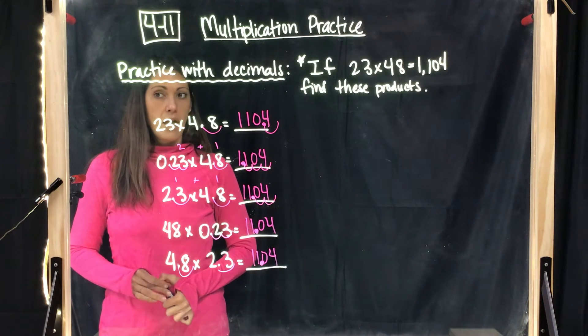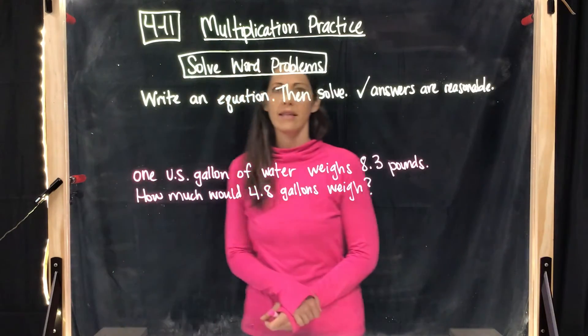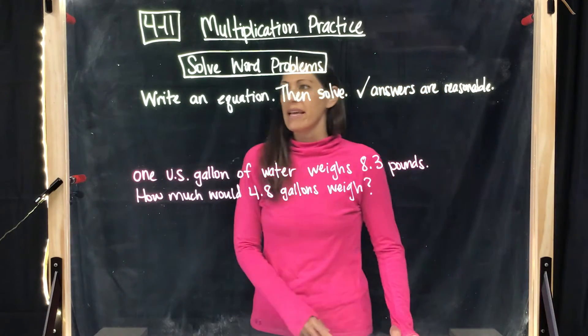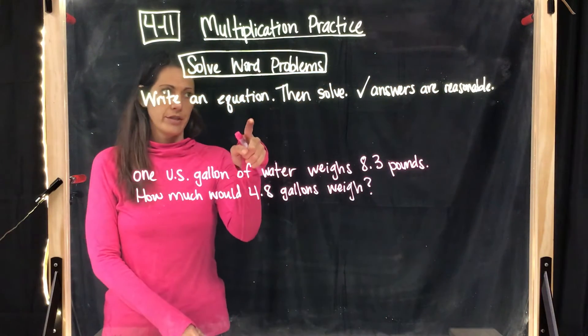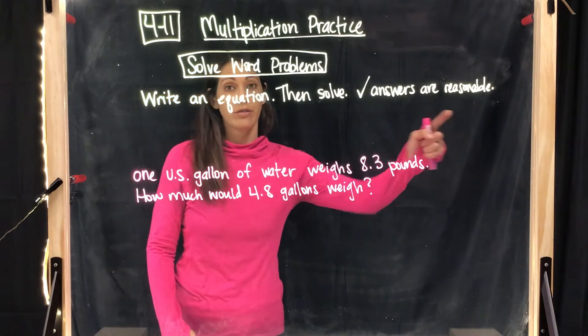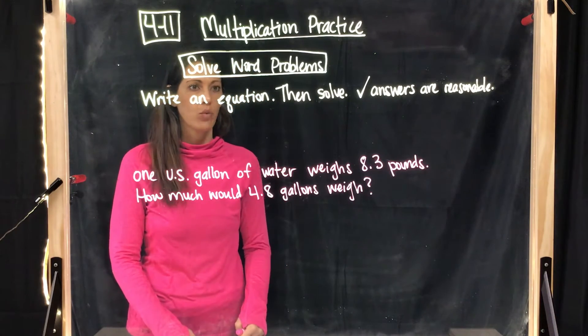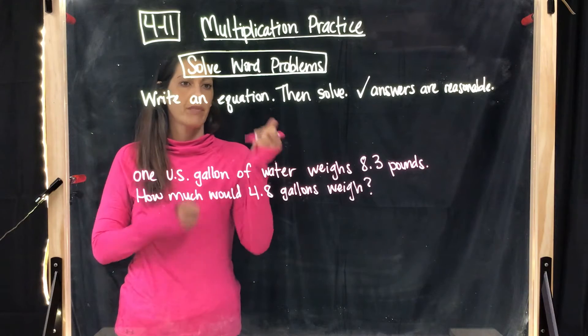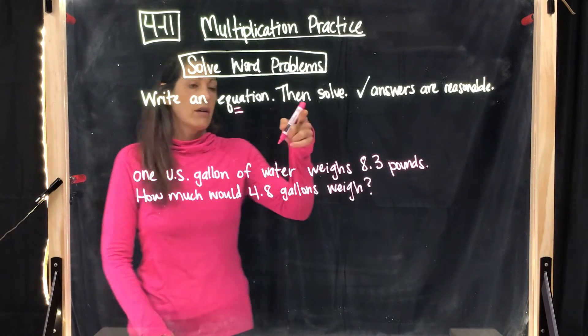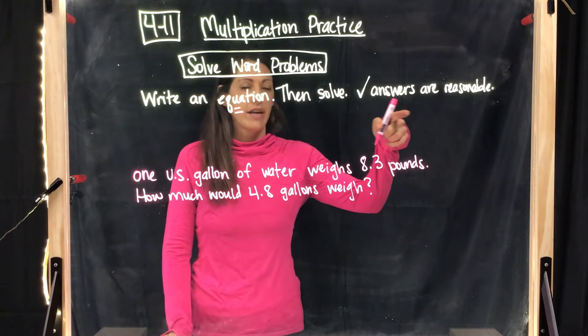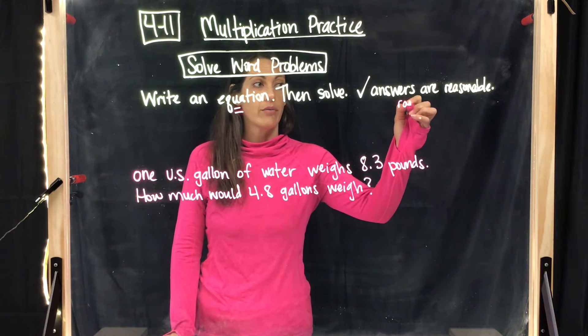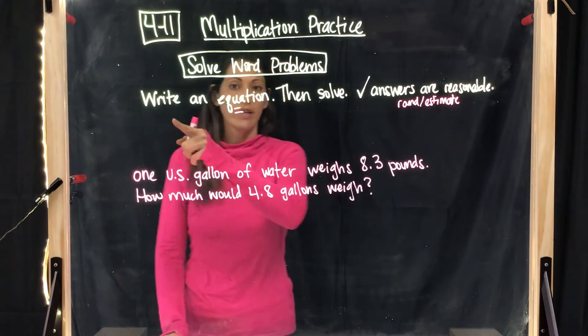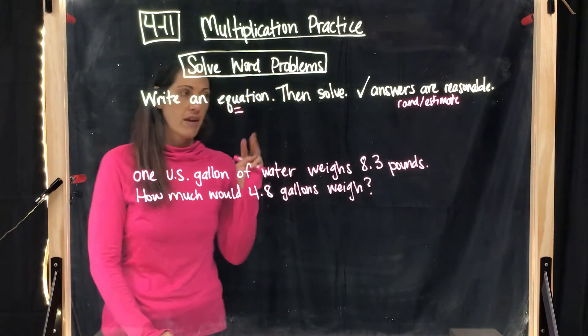Let's take a look at some word problems on page 152 in your workbook. It's asking us to write an equation, then solve, and then check that your answers are reasonable. So there's going to be three parts to each of these word problems. First, we have to write an equation. An equation has to have an equal sign and usually a variable. Solving, we have to have an answer. And checking that your answers are reasonable usually is asking you to round or estimate. So it's important to read these directions and know that they're asking for three things.